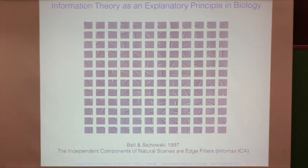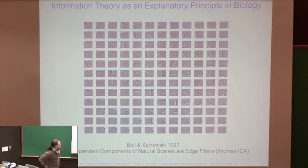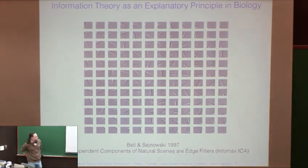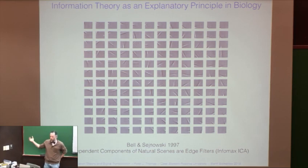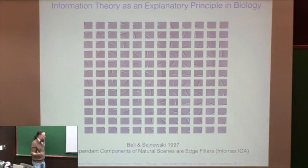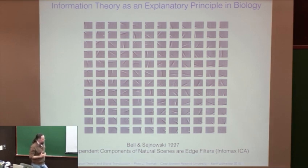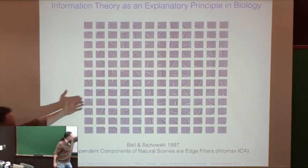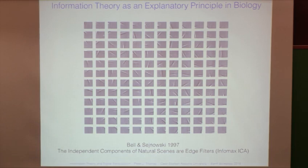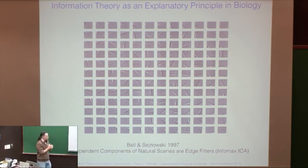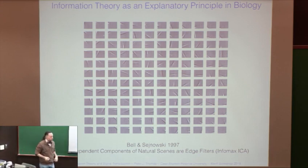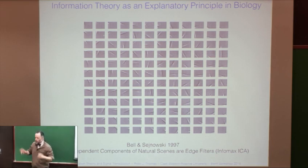This is a diagram from a paper by Tony Bell and Terry Sejnowski from 1997. What they did — along with other people at the same time — was take an ensemble of images collected from natural scenes and apply an information theoretic criterion to optimize the representation: either the most informative or the sparsest representation. The filters that came out look like oriented, compact plus-minus bars in different orientations — just what receptive fields look like for simple cells in the visual cortex. This is tied closely to Barlow's redundancy reduction ideas.